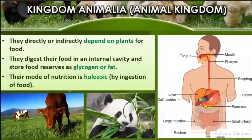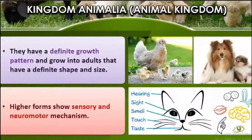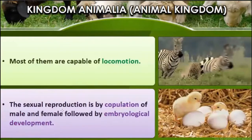Animals directly or indirectly depend on plants for food. They digest their food in an internal cavity and store food as glycogen or fat. Their mode of nutrition is holozoic, meaning by ingestion of food. They have a definite growth pattern and grow into adults with a definite shape and size. Higher forms show sensory and neuromotor mechanisms with well-developed nervous systems. Most are capable of locomotion. Sexual reproduction is by copulation of male and female followed by embryological development.